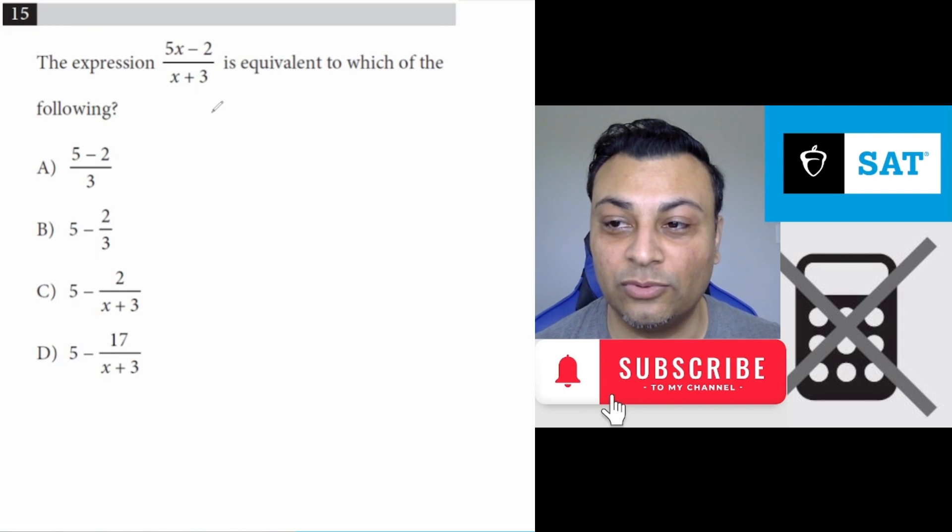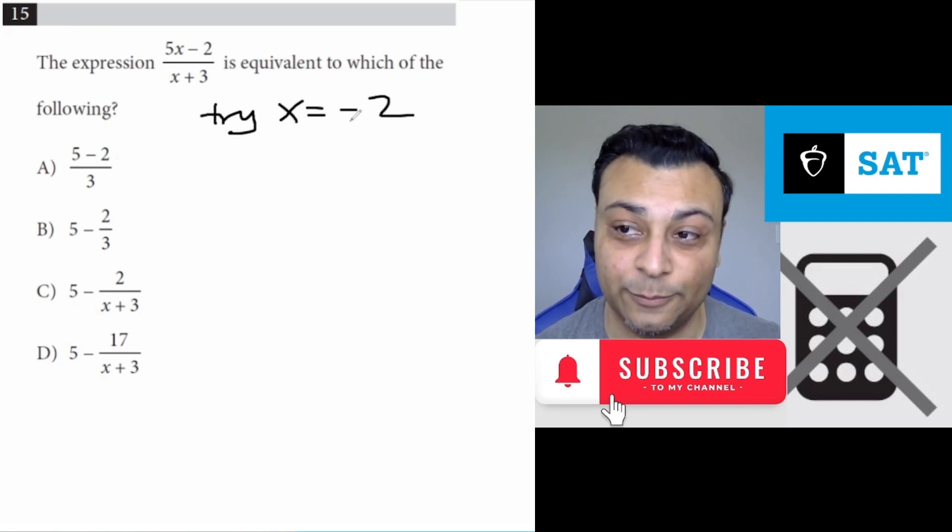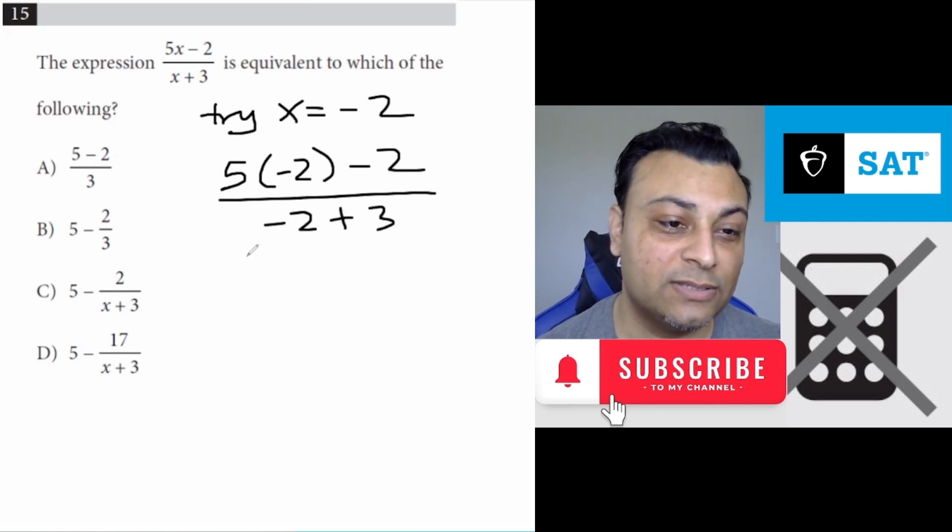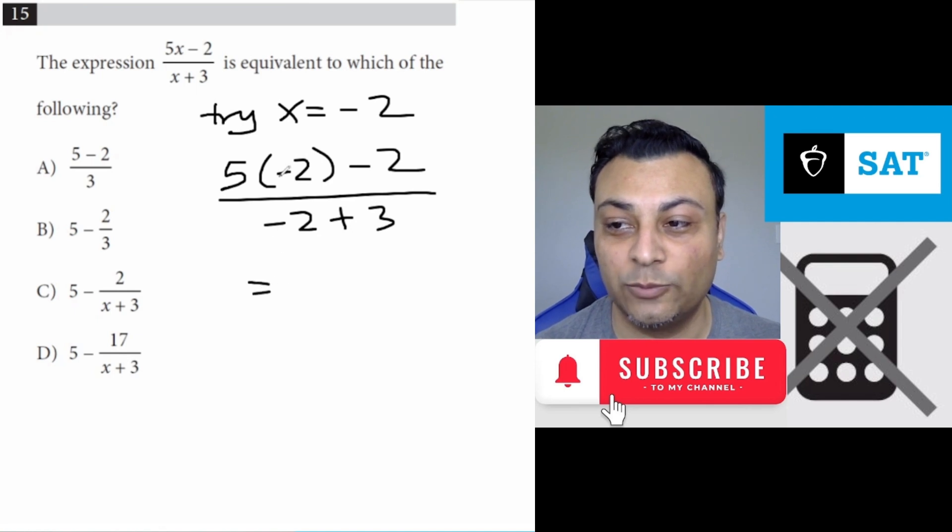So we're going to use negative 2. I'm going to try x equals negative 2. This is another method. So let's plug it in. You get 5 times negative 2 minus 2 over negative 2 plus 3. As promised, the denominator is 1, which makes it very easy to work with. You end up with negative 10 minus 2 on the numerator over 1. This is negative 12.